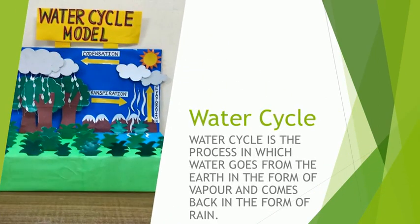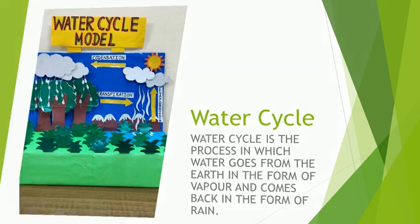Water cycle is the process in which water goes from the earth in the form of vapor and comes back in the form of rain.